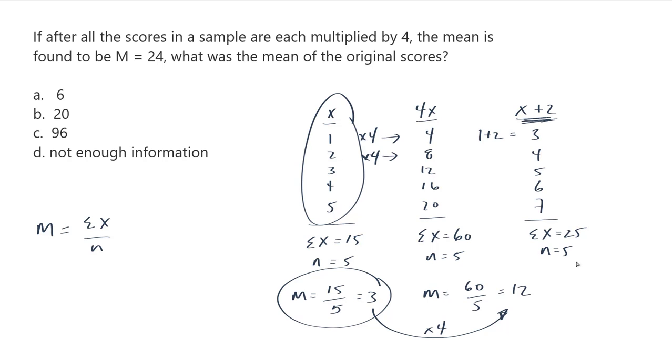There are still 5 scores. And so the mean is going to be the sum of x, 25 over 5. That is 5.